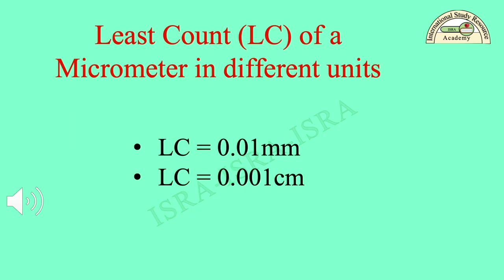You have now calculated the least count of this micrometer screw gauge in two units — mm and cm. The first result: LC = 0.01 mm. The second result: LC = 0.001 cm.